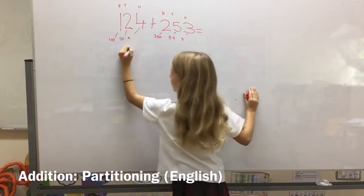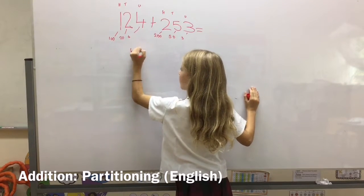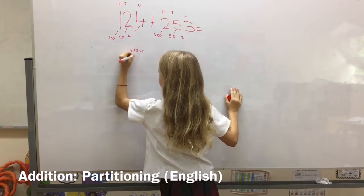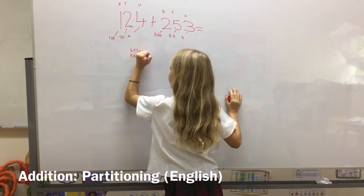First, we're going to be doing 4 plus 3, which equals 7. Then we're going to be doing 50 plus 20, which equals 70.